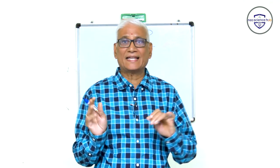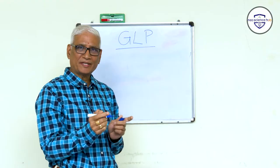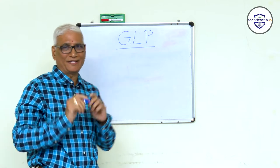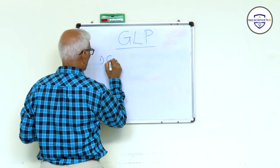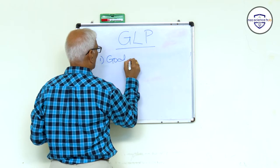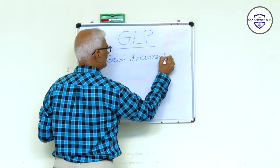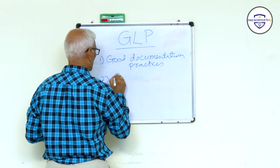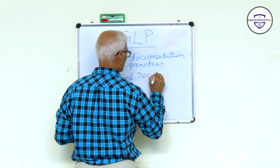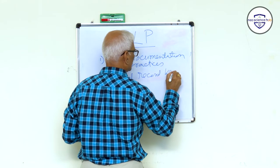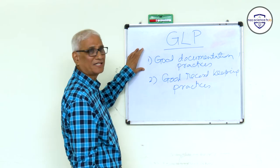Let us see the salient features of good laboratory practices. GLP consists of two major parts: one is good documentation practices, and the second one is good record keeping practices. Let us see how good documentation practices can be achieved.